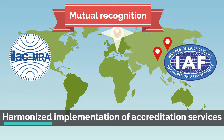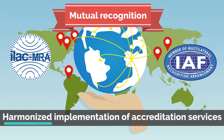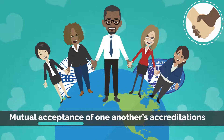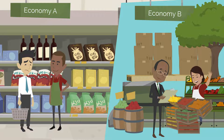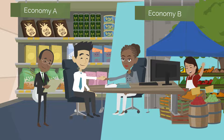The ILAC MRA and IAF MLA are established between signatory accreditation bodies to ensure a harmonized implementation of accreditation services and, hence, a mutual acceptance of one another's accreditations. These arrangements provide assurance that bodies from different economies operate to the same international standard, reducing technical trade barriers by promoting international confidence and acceptance of conformity assessment results.